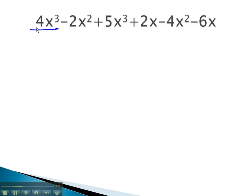The first term is 4x³. There's another term just like it, the 5x³. Notice the variable and exponent match, so we can add the numbers in front. 4 plus 5 gives us 9 of these x-cubes.